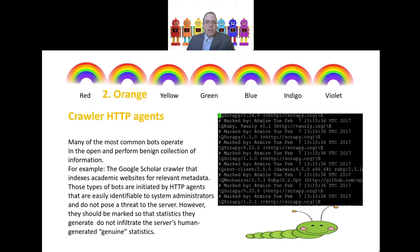The next level covers crawler HTTP agents. Many of the most common bots operate in the open and perform benign collection of information — for example, the Google Scholar crawler that indexes academic websites for relevant metadata. Those types of bots are initiated by HTTP agents that are easily identifiable to system administrators and do not pose a threat to the server. However, they should be marked so that the statistics they generate do not infiltrate the server's human-generated genuine statistics. On the right you can see a list of HTTP agents known to belong to bots, such as Scrapy and different versions of Ruby. Those are excluded from OKR statistics via a configuration file.